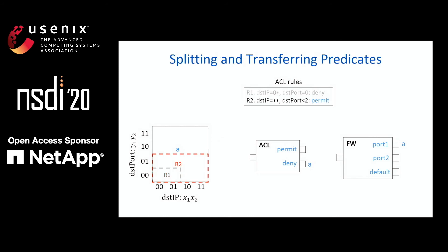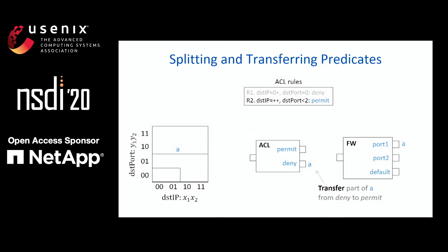Suppose another ACL rule R2 is inserted, which has a lower priority than R1, and due to priorities it matches the gray area. Since the action of R2 is permit, packets belonging to this area will change their forwarding behavior from being denied to permitted. To reflect that change in our model, we transfer those packets from the deny port to the permit port. However, since there is no predicate for expressing those packets, we first need to create a new predicate B by splitting predicate A. After that, we can transfer predicate B to the permit port, and we finish the update. After the update, our model still captures the forwarding behavior in the network.